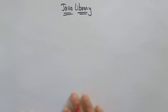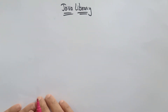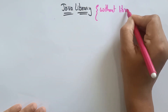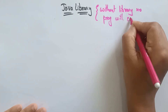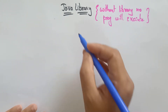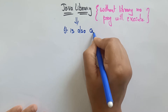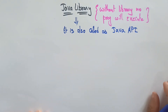Hi students, welcome back. Let's continue with our Java concepts. In this video I want to explain what exactly the Java library is. One point you have to remember: without library functions, without library, no program will execute. In C programs you used to call it as a hash include stdio.h, and here in Java we call it as Java packages. Java library is also called as Java API.